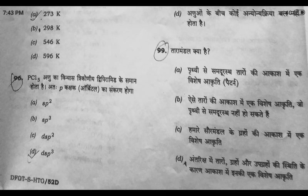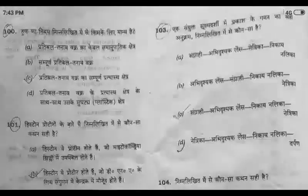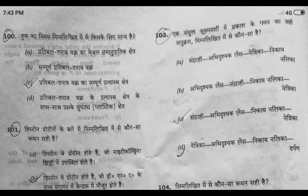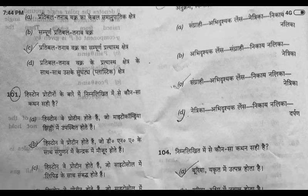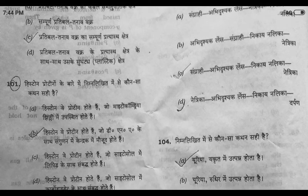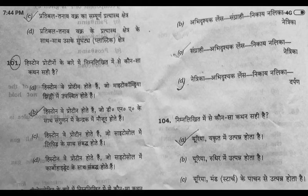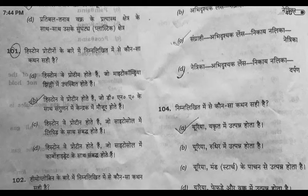तारामंडल क्या है — अंतरिक्ष में ग्रहों, तारों और उपग्रहों की स्थिति के कारण आकाश में इनकी एक विशेष आकृति। हुक का नियम निम्नलिखित में से किसके लिए माना जाता है — प्रतिबल-विकृति वक्र का संपूर्ण प्रत्यास्थ क्षेत्र।